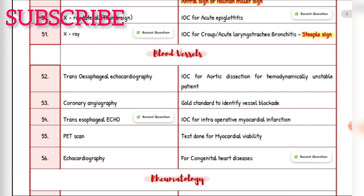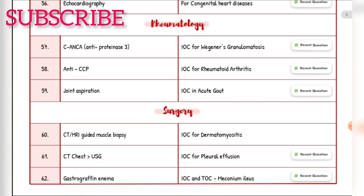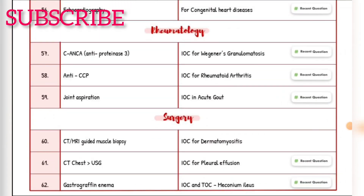Investigation of choice for intraoperative myocardial infarction — trans-esophageal echo. Test done for myocardial viability — PET scan. For congenital heart disease — echocardiography. Rheumatology: Investigation of choice for Wegener's granulomatosis — c-ANCA (anti-PR3). Investigation of choice for rheumatoid arthritis — anti-CCP. Investigation of choice in acute gout — joint aspiration. Investigation of choice for dermatomyositis — CT/MRI-guided biopsy. Investigation of choice for pleural effusion — CT chest ultrasound. Investigation and treatment of choice for meconium ileus — gastrografin enema.